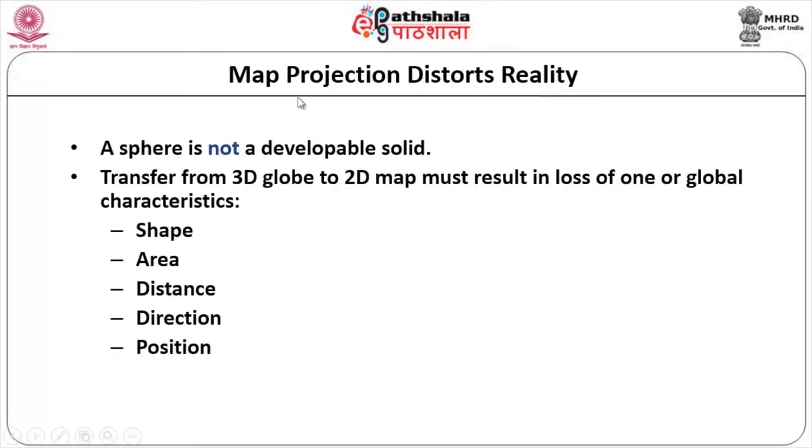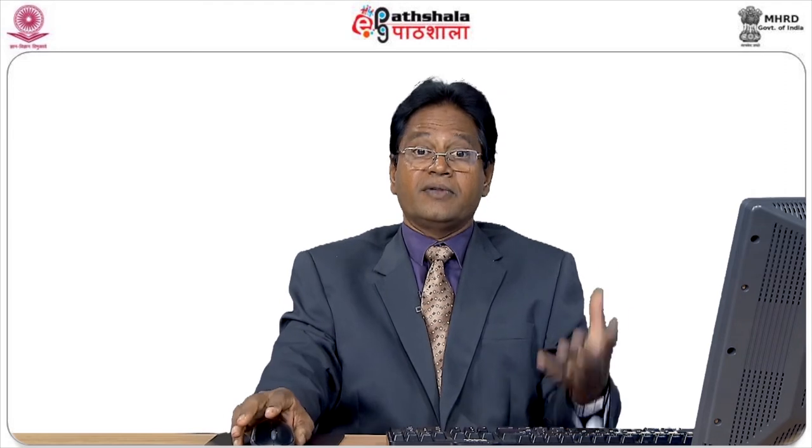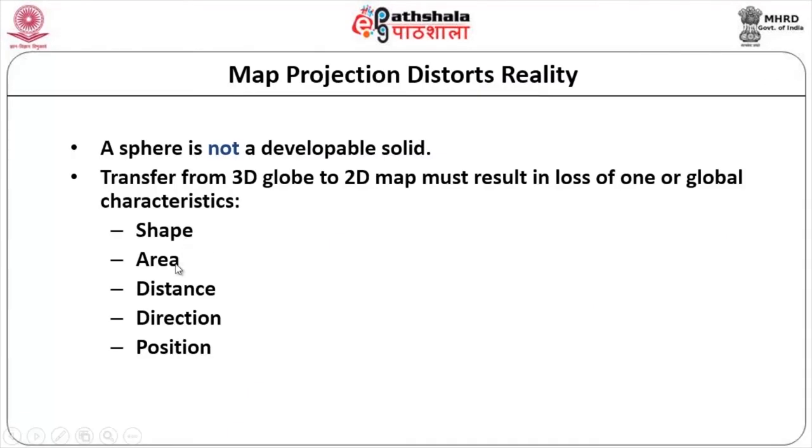A spheroid is not a developable solid. Take a ball, cut it in two, and try to flatten it — somewhere it has to break. That is the problem with projecting the earth. It is not a developable solid. To transform 3D data into 2D, distortion will occur in the form of shape, area, distance, direction, and position — five effects. Since distortion is unavoidable, we accept 1 or 2 distortions in each projection and create the projection accordingly.